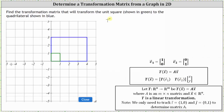Let's begin by determining the transformation of the vector E sub one, which is the transformation of the vector (1, 0). Going to the graph, notice how the vector (1, 0) is the vector along the side of the unit square along the x-axis. The transformation of this vector is the vector that forms the corresponding side of the blue quadrilateral, which is this longer vector along the x-axis, the vector (4, 0). So the transformation of the vector (1, 0) is the vector (4, 0).